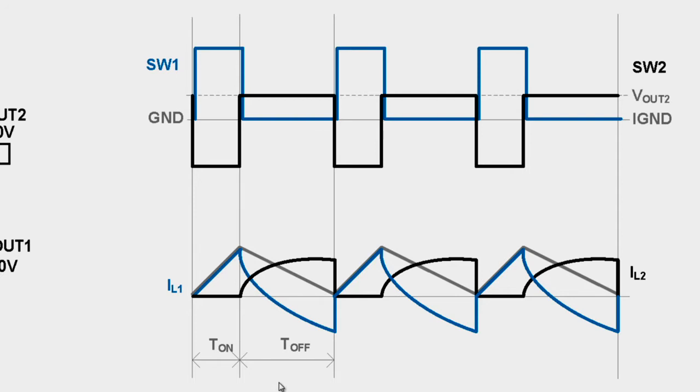The operation of a FlyBuck converter can be divided in two subintervals in every switching cycle. When the high side switch is on, the subinterval is T on, and when the low side switch is on, its subinterval is called T off, or the off time.